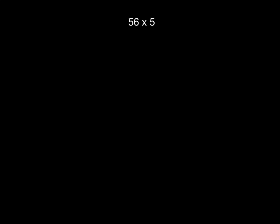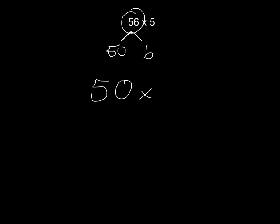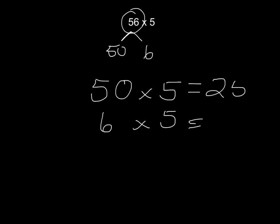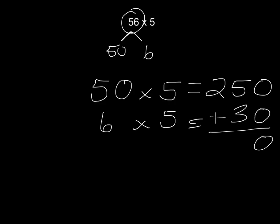Trying that one more time: 56. Break my number apart into 50 and 6, and I will just write out the questions instead of putting them in a grid — 50 times 5 and 6 times 5. If I know 5 times 5 is 25, then 50 times 5 is 250. And 6 times 5 is 30. Add those together: 56 times 5 equals 280.